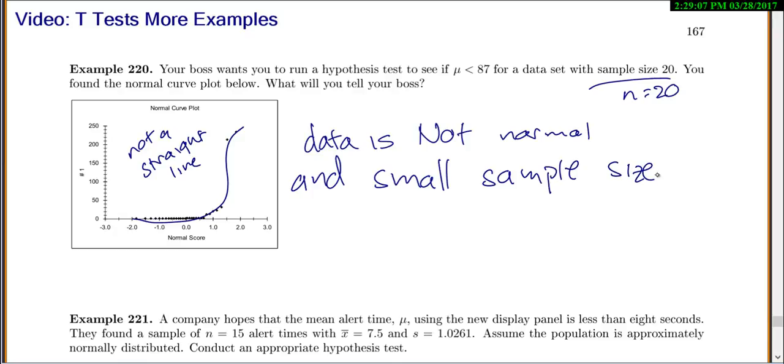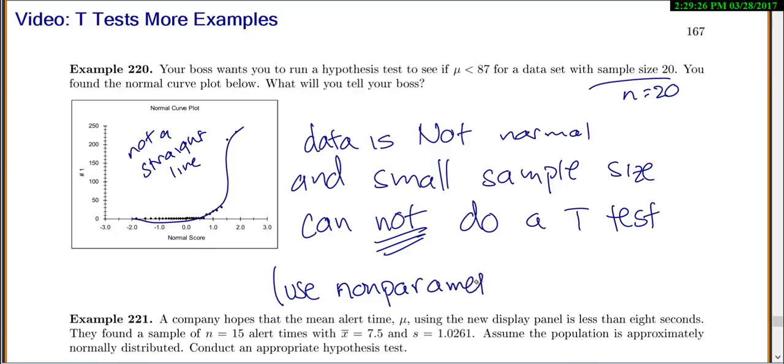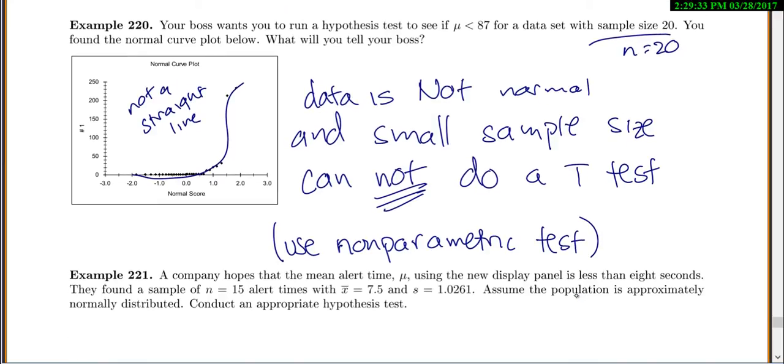Now if you have data that's not normal and you have a small sample size, that means you cannot do a t-test. And so you'd go to them and say, well, I can't actually do this. Now in practice we would use a non-parametric test instead, but we don't know how to do that in this class. So we would just say we can't do this.